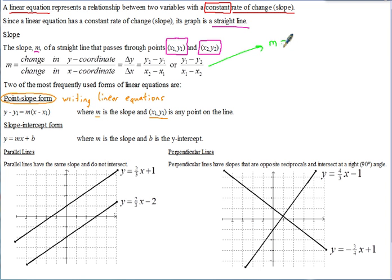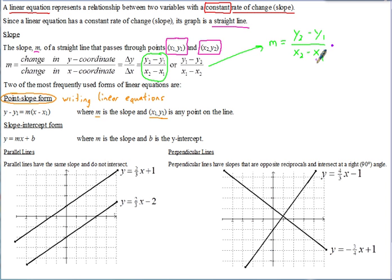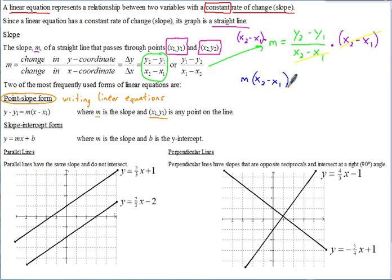Remember, slope is often written as M. Using the form Y₂ minus Y₁ over X₂ minus X₁, to get rid of the fraction we multiply both sides of the equation by the denominator X₂ minus X₁. On the right side, X₂ minus X₁ cancels out, so you're left with M times (X₂ minus X₁) equals Y₂ minus Y₁.